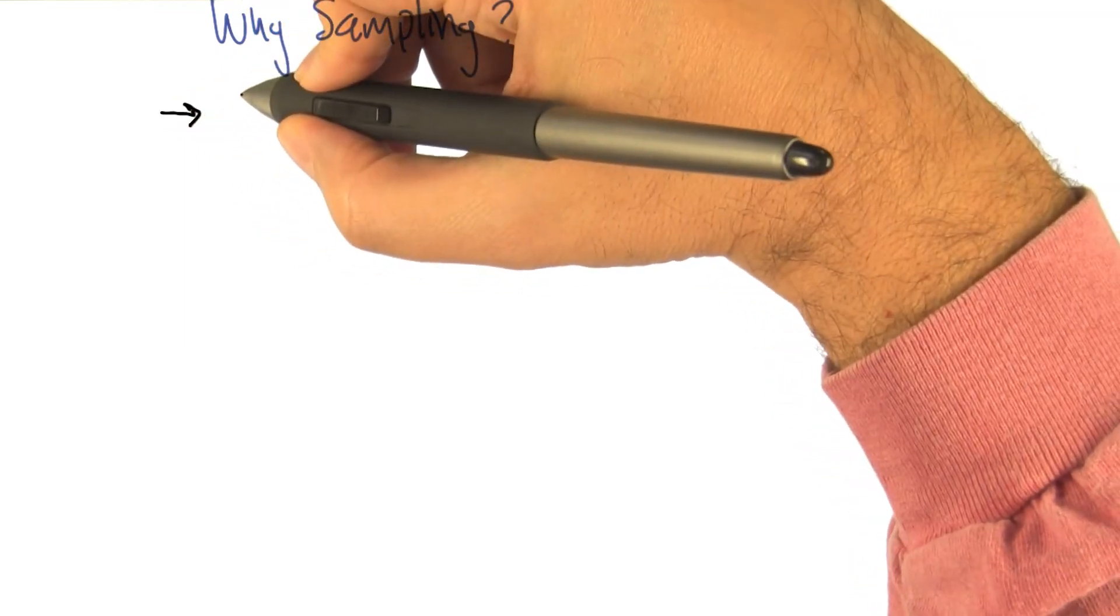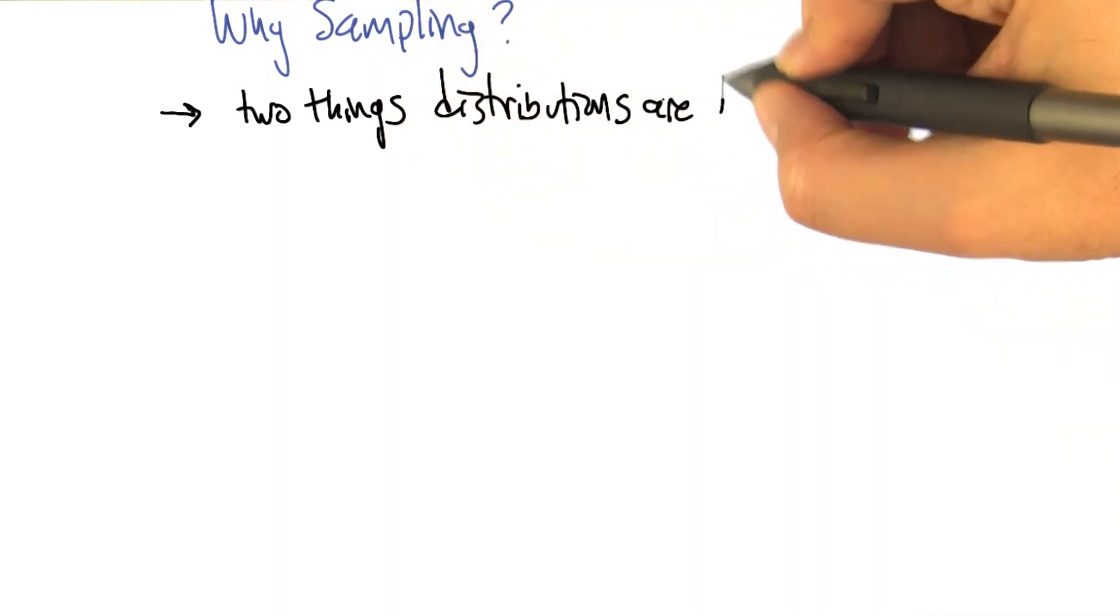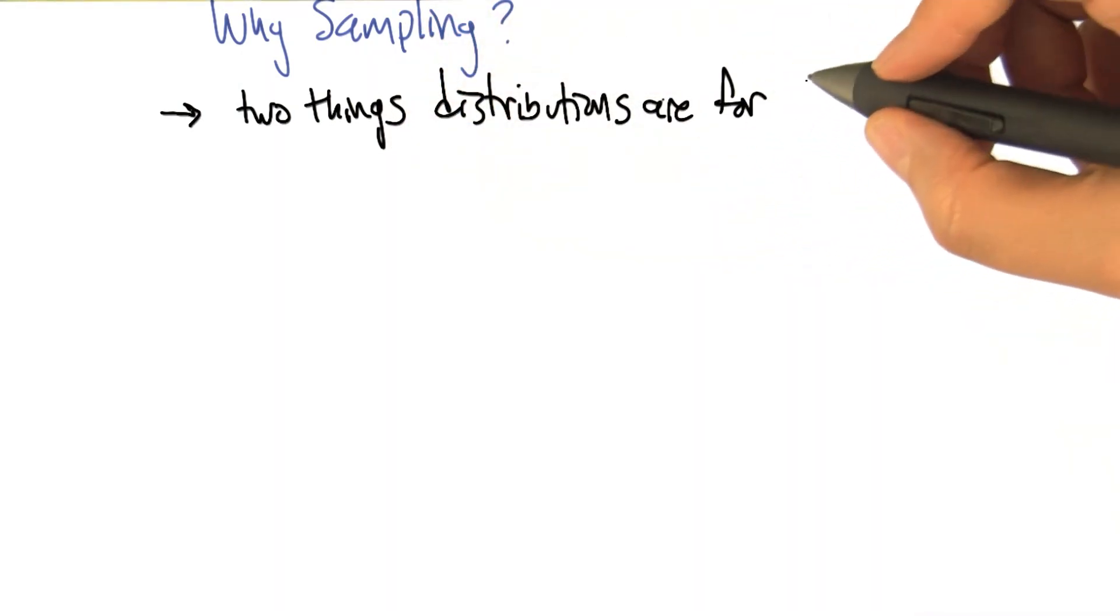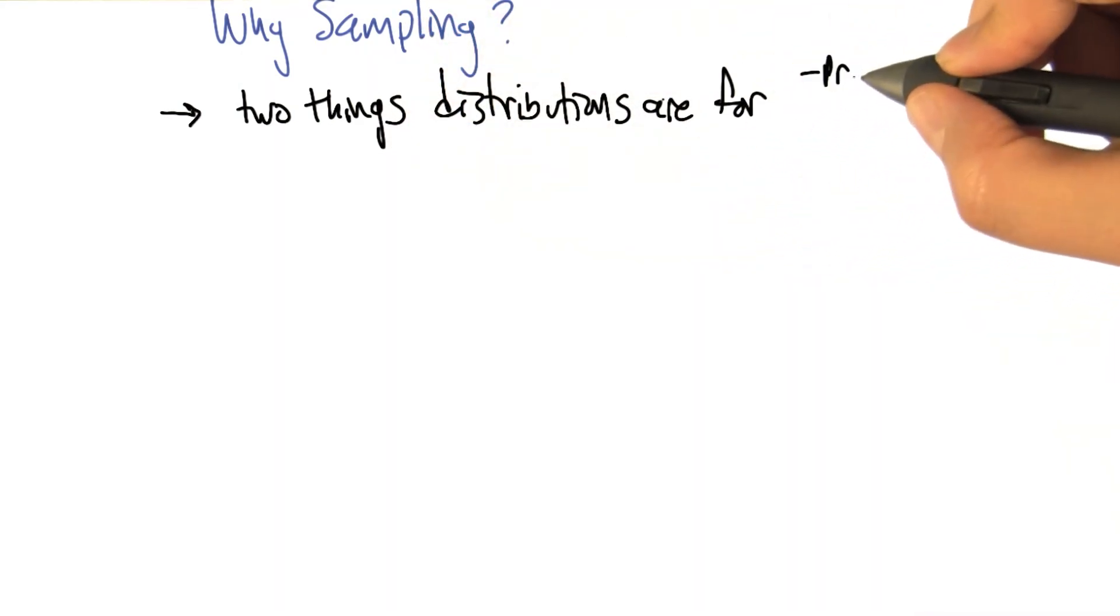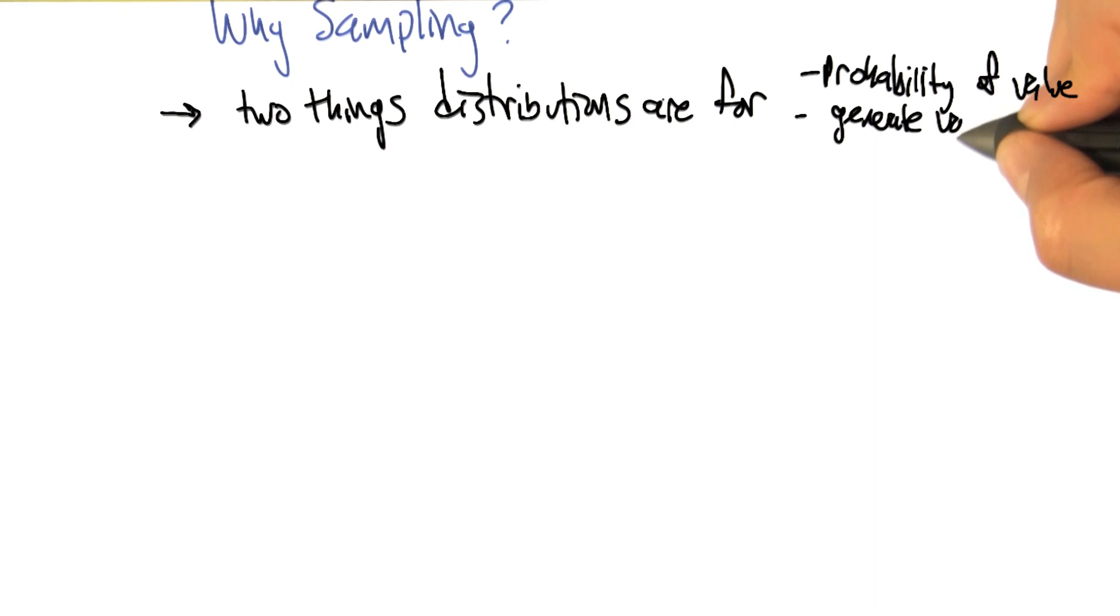Well, because it's one of the two things that distributions are for. What does that mean? So why do you have a distribution? A distribution is so that given some value you can tell me what's the probability of me seeing that value, which is kind of what it looks like when you have the probability function. But also if you have a nice distribution, you can generate values according to that distribution. That's a little bit circular in the sense that it didn't tell me why it was useful to generate them other than it's one of the things you can do.